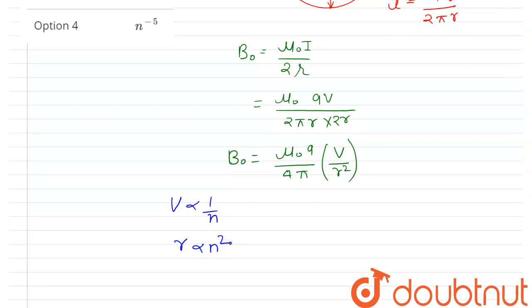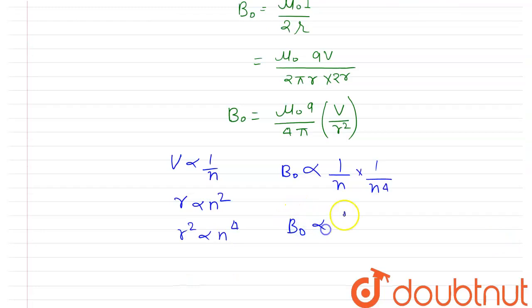Just put them here. So if you see this expression, B₀ is proportional to v and inversely proportional to r. So I will write B₀ is proportional to 1/n and inversely proportional to n². So v ∝ 1/n and r ∝ n². Now you can see B₀ is directly proportional to 1/n⁵.